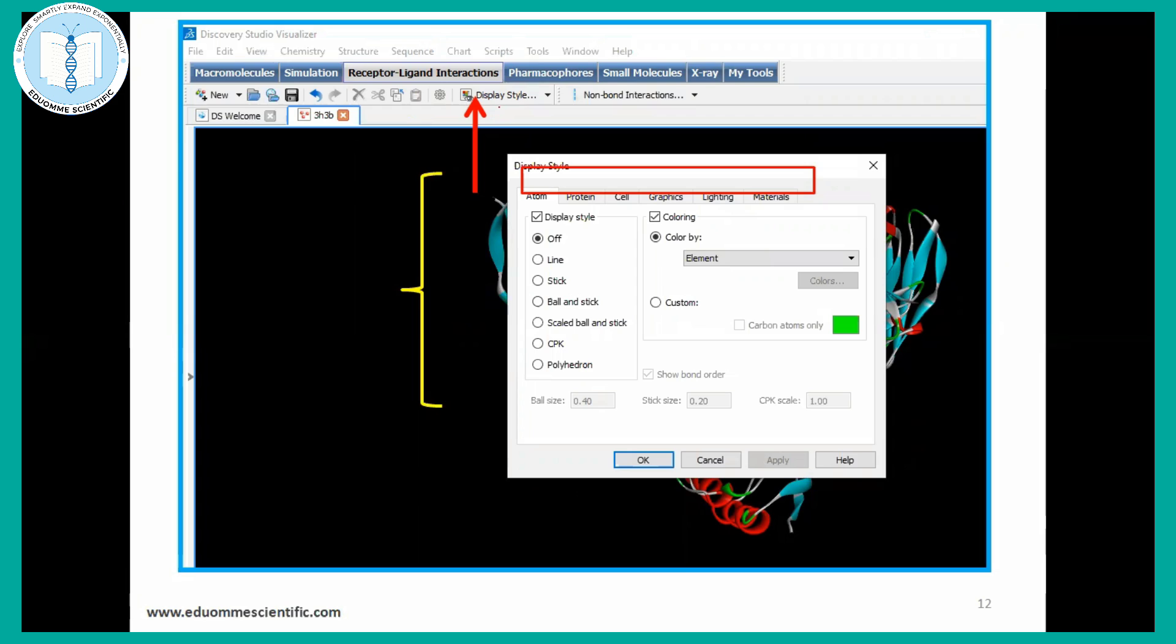If you will click here in display style also, there are different features also like actions. For publication quality, if you want to change the background, lighting, graphics, or different settings, you may select these features from here. If you want stick format, ball stick, or CPK model, then you can get it here. And the color coordination also, you can change. The background also you can change.